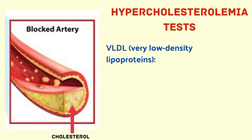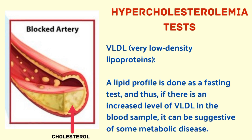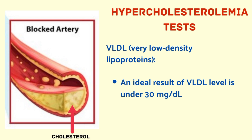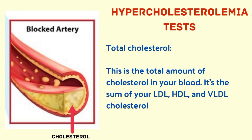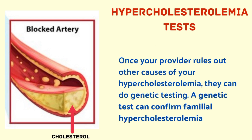VLDL (very low-density lipoprotein) appears in the blood soon after consuming food. Since a lipid profile is done as a fasting test, an increased level of VLDL in the blood sample can be suggestive of metabolic disease. An ideal VLDL level is under 30 mg per deciliter. Total cholesterol is the total amount of cholesterol in your blood — the sum of your LDL, HDL, and VLDL. An ideal result for total cholesterol is less than 200 mg per deciliter.